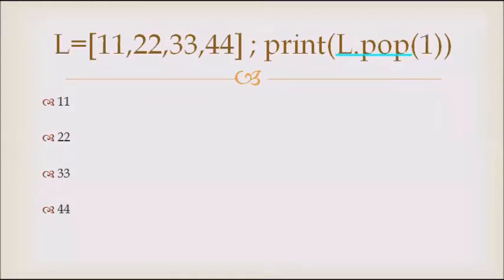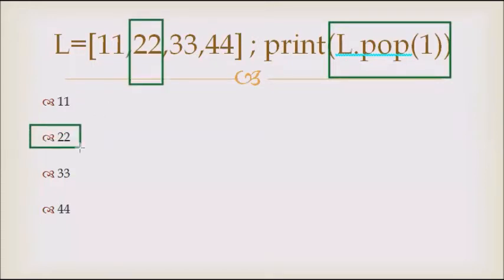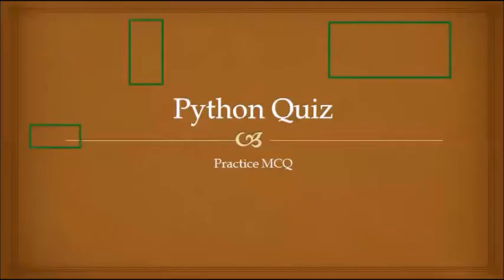Now the last question in the row. We are writing pop 1. Pop 1 means this is at 0, so number 22 is at 1. So the answer will be this. I hope you people found the questions easy. Let's wait for the next set of questions in the same series.